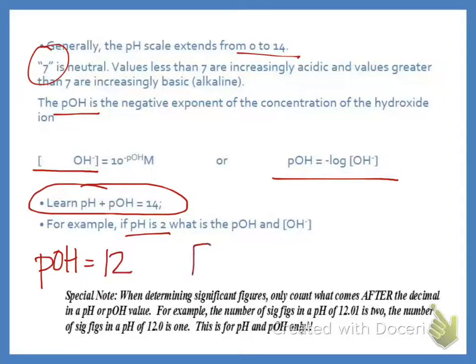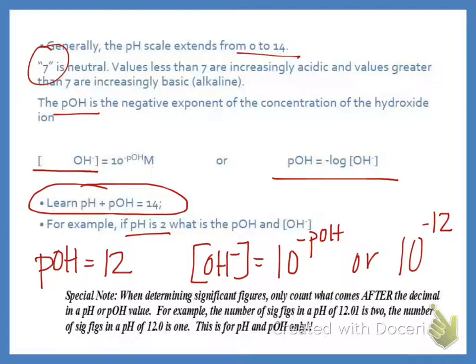If I wanted to find the hydroxide concentration, I would say 10 raised to the negative pOH, or it would be 10 raised to the negative 12. If I had wanted to find the hydrogen concentration, it would be 10 raised to the negative 2.